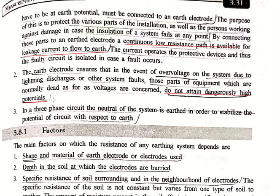The third reason for using an earth electrode is that in a three-phase circuit, the neutral of the system is earthed in order to stabilize the potential of the circuit with respect to the earth. This is the third application of using an earth electrode.